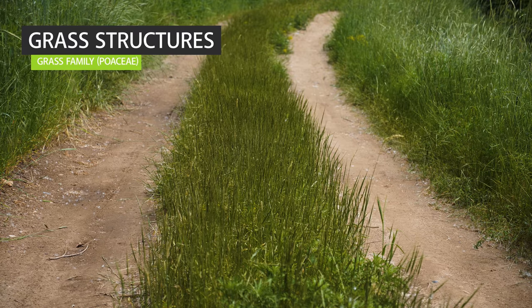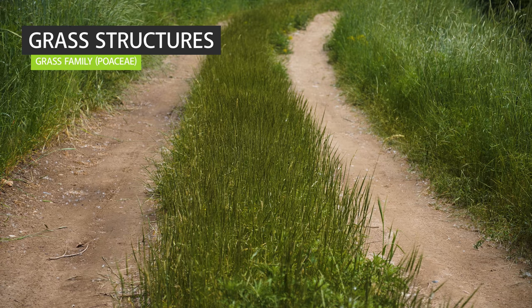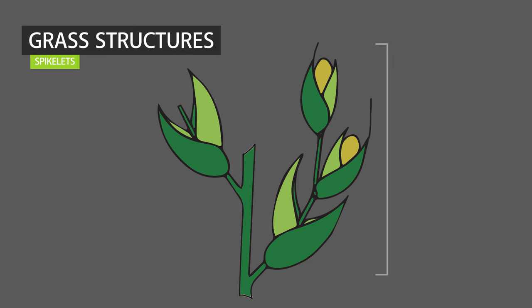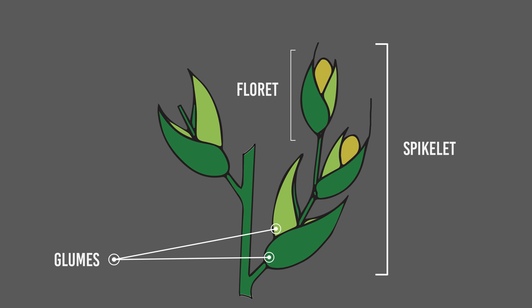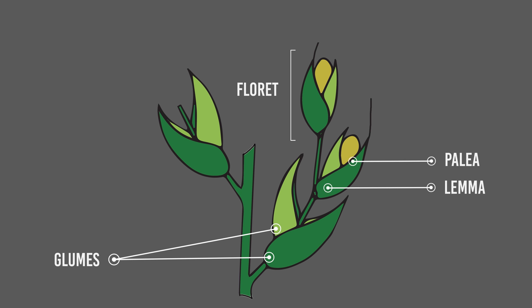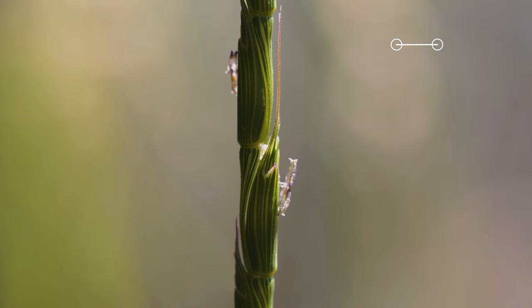Though grasses share a lot of features with other flowering plants, they have several unique traits that can greatly aid in their identification. Grass inflorescences are seed heads composed of spikelets. Each spikelet consists of two glumes and one or more florets. Each floret contains reproductive parts surrounded by a lemma and palea. The glumes, lemma, and palea are modified leaves that are roughly equivalent to the sepals and petals of more conventional flowers. In some grass species, one or more awns extend from the tip of the lemma. These can be long or short, straight or curved, or absent.